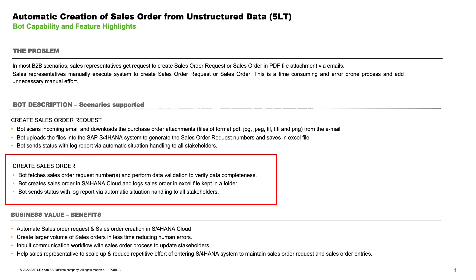This is not included in the demo, but if the user chooses to go this route, the bot would take the Excel file containing the sales order request numbers as an input and convert the sales order requests contained in the file to sales orders. After this is done, an email would be sent to stakeholders with the bot execution status report and email attachments.